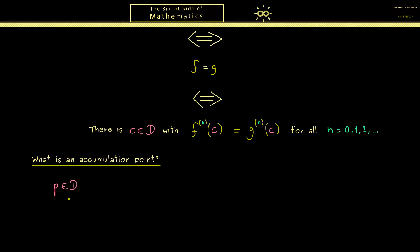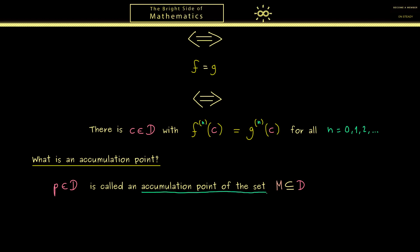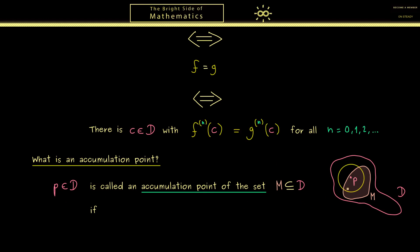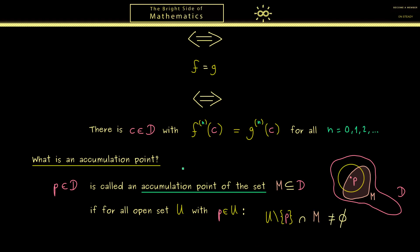We take a point p in d and it is called an accumulation point of the set M, where M can be any subset in d. The first thing to note is that the notion of accumulation point is always with respect to a given set. The point p can be an element in M, but it does not have to be. The only thing we need is that it has a lot of neighbors lying in the set M around it. We describe this notion of neighborhood with open sets or open epsilon balls. We consider all open neighborhoods of p — all open sets U where p is an element of U — and then what we want is that U without the point p still has elements of the set M, i.e., the intersection with M is non-empty.